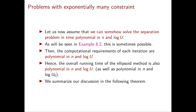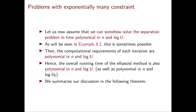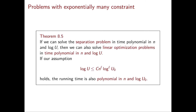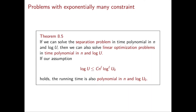Now let's assume we can solve the separation problem in time polynomial in n and log U. If this happens, then the number of operations performed in each iteration of the ellipsoid method is polynomial in n and log U. Since the number of iterations is also polynomial in n and log U, we obtain that the total running time is polynomial in n and log U, and therefore polynomial in n and log U_0. We obtain the following key theorem: if we can solve the separation problem in time polynomial in n and log U, then we can also solve linear optimization problems in time polynomial in n and log U. Furthermore, if log U ≤ C · n^L · (log U_0)^L, then the running time is polynomial in n and log U_0, and therefore polynomial in the size of our input.